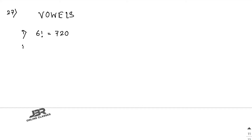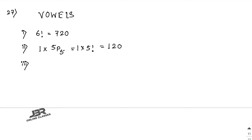Number two: each word begins with S. So with S fixed at the start, the remaining 5 letters can be arranged in 5P5 ways. That is 5! = 1 × 2 × 3 × 4 × 5 = 120.